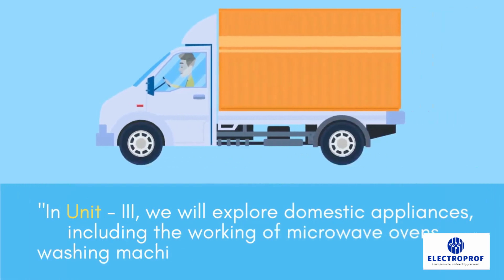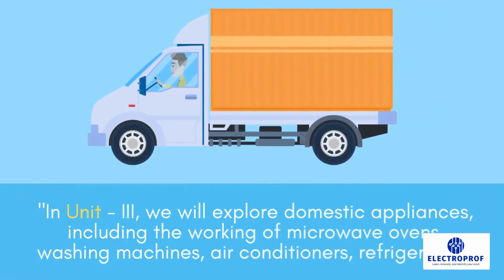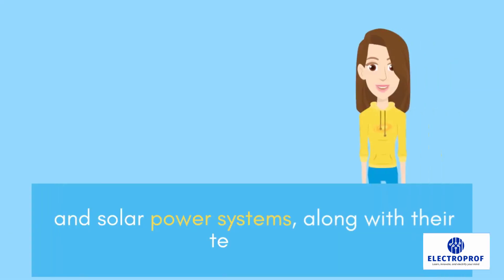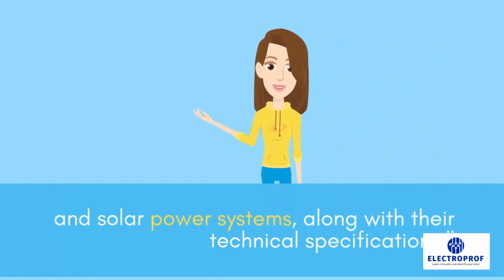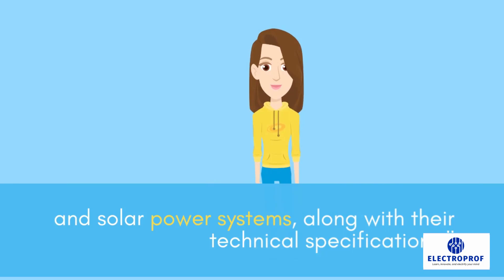In Unit 3, we will explore domestic appliances, including the working of microwave ovens, washing machines, air conditioners, refrigerators, and solar power systems, along with their technical specifications.